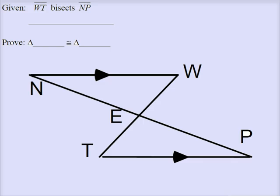So we're given that WT bisects NP, and we want to prove that these two triangles are congruent. So first things first, we need to name the triangles. If I start with angle N here as one of the sides in my triangle,